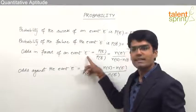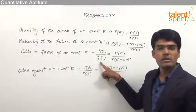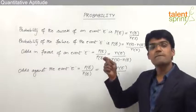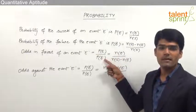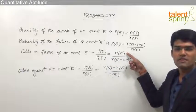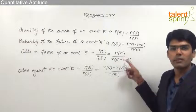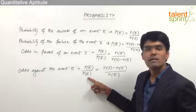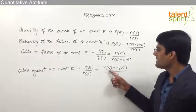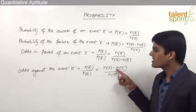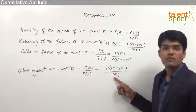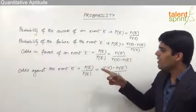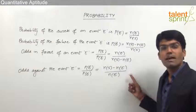Odds in favor of an event E equals the probability of success divided by the probability of failure, which can be taken as the number of outcomes in favor of the event divided by the number of outcomes not in favor. Likewise, odds against event E equals the probability of failure divided by the probability of success, which is [N(S) − N(E)] / N(E) — that is, the number of unfavorable outcomes divided by the number of favorable outcomes.